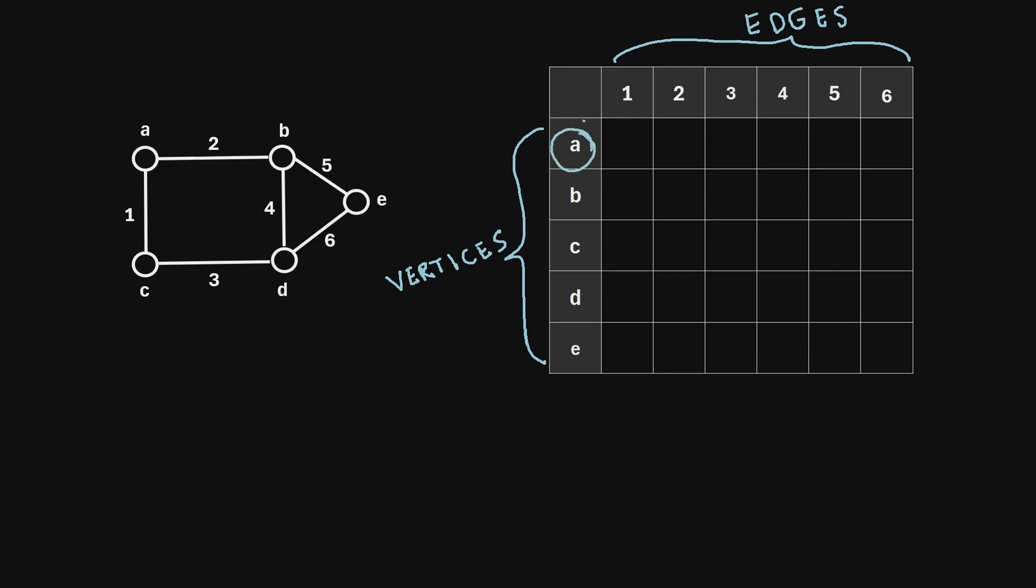So if we consider this first row here, let's consider vertex A. Let's first consider edge 1. In the graph, is A incident with edge 1, or in other words, is A an endpoint of edge 1? Well, we can see that yes, it is. A is incident with edge 1 right here. So we're going to give this box a 1 within the matrix.